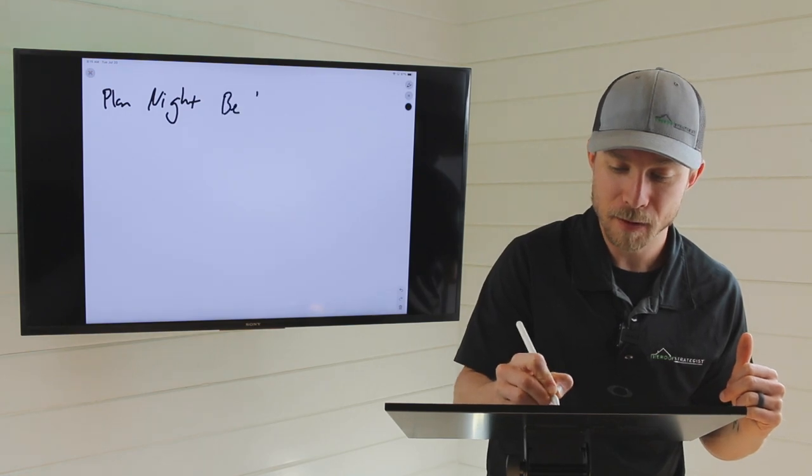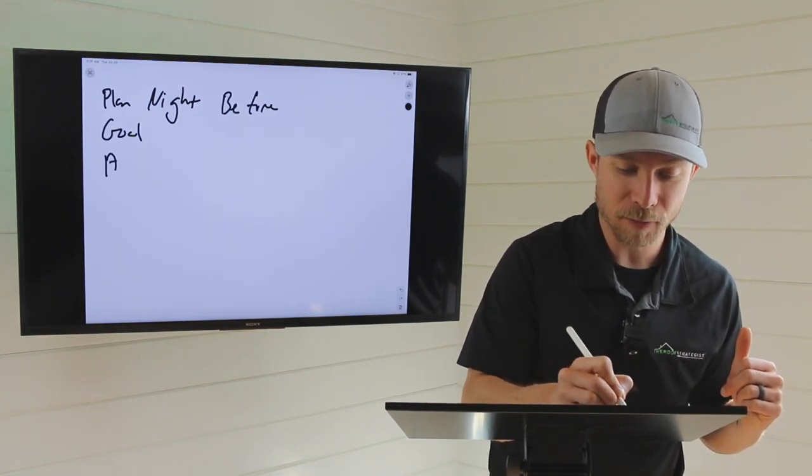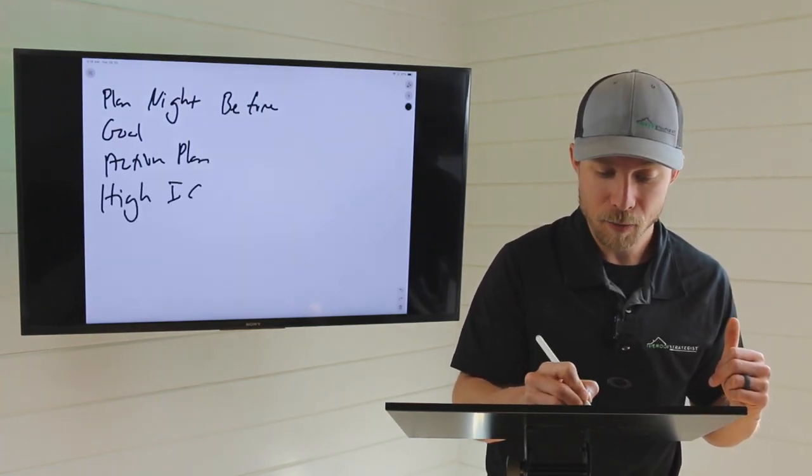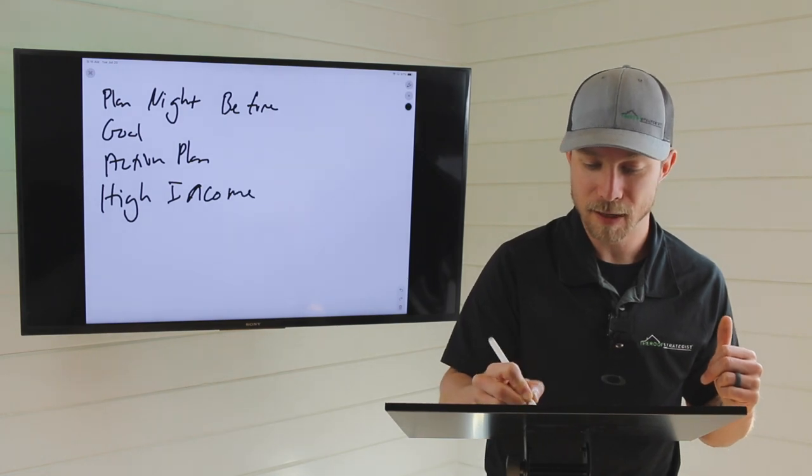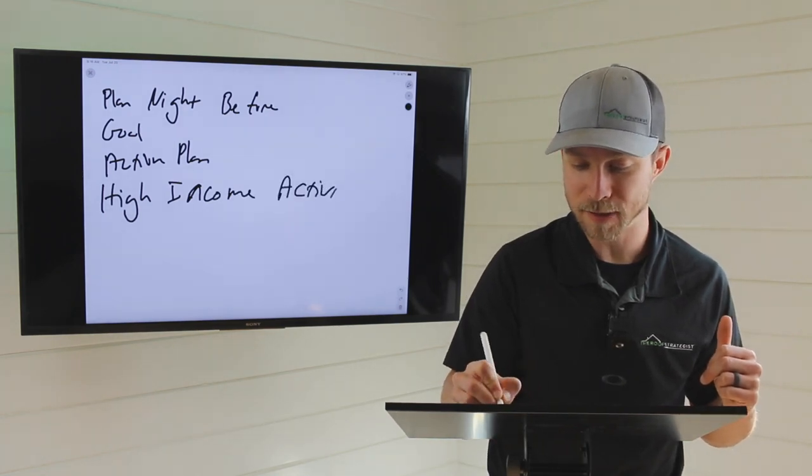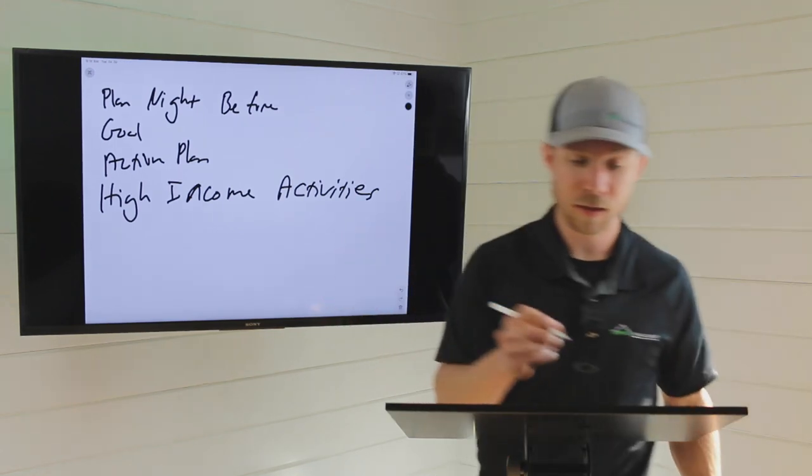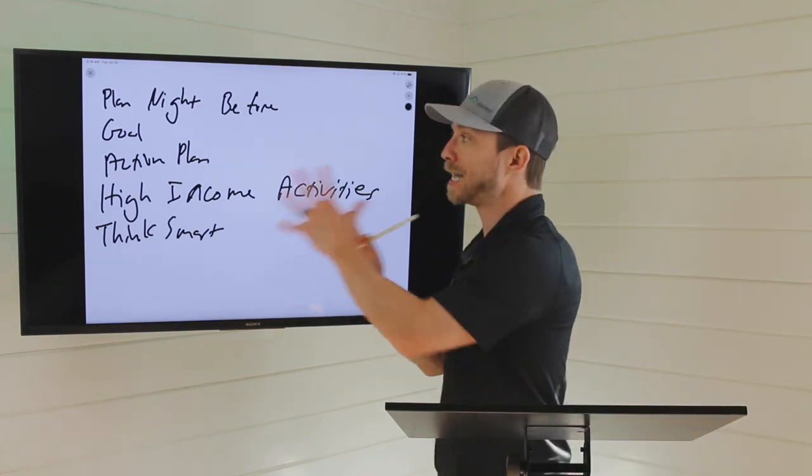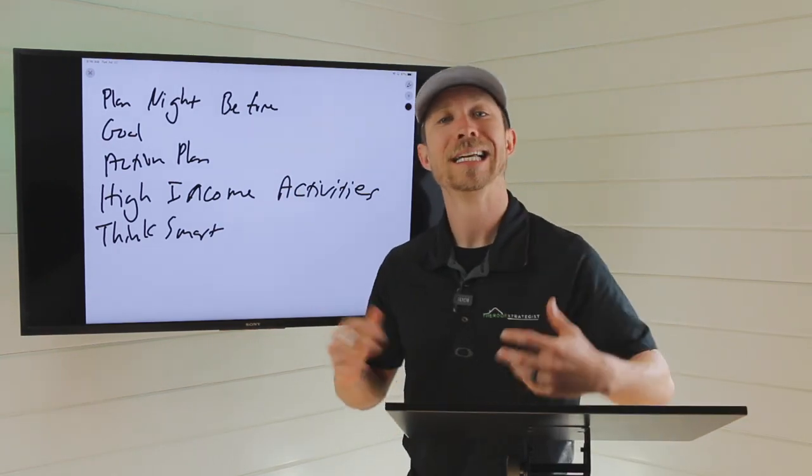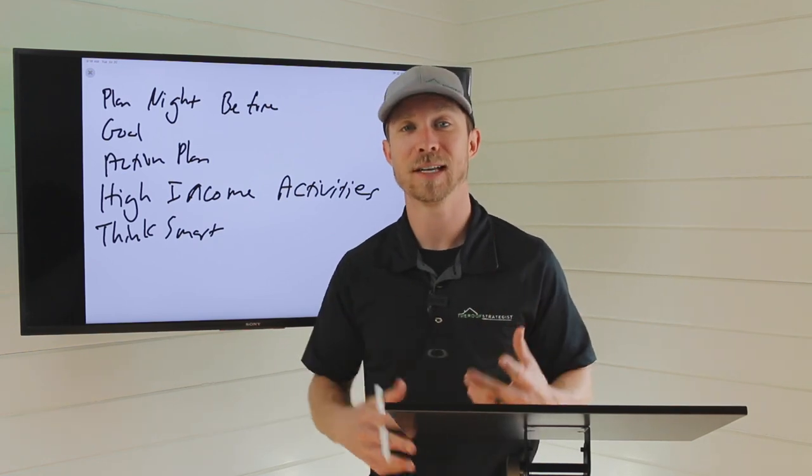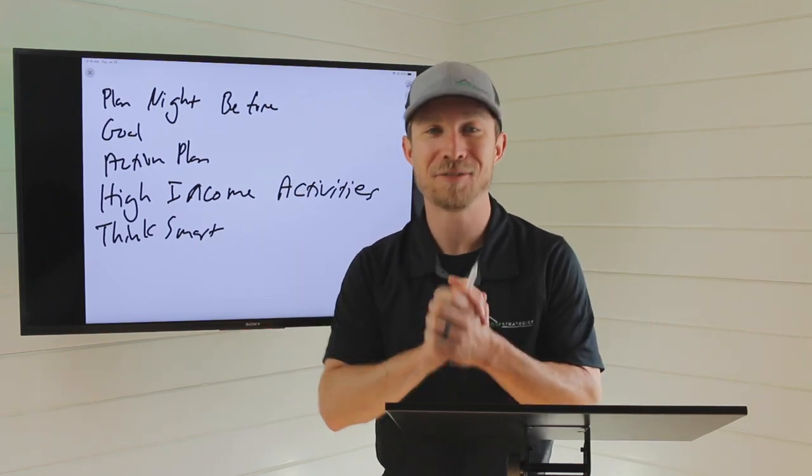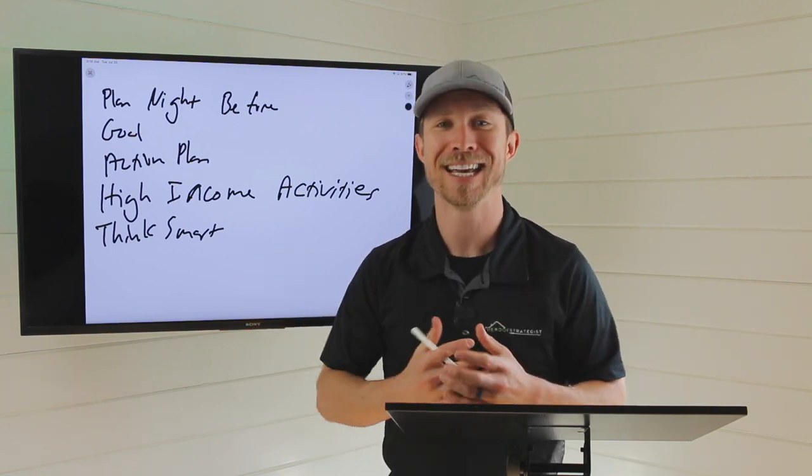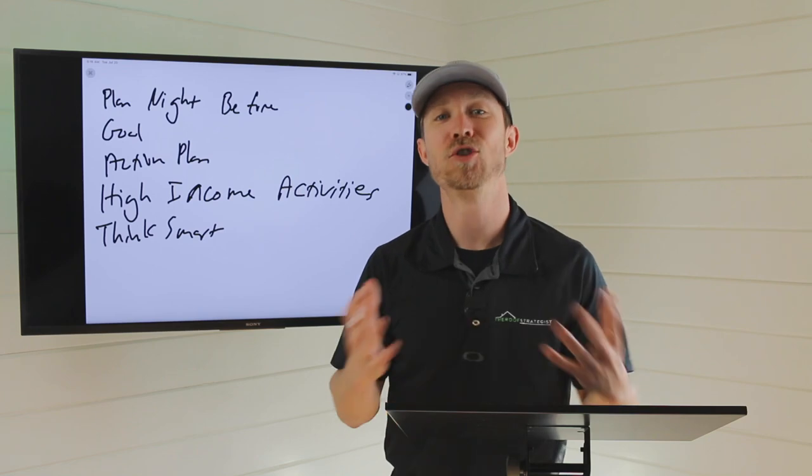So at the end of the day, the high level details are this: plan the night before, have a daily goal, have an action plan, structure your day around high income producing activities, and then think smart about limiting your time and use it wisely. Here's a quick recap to help you see what it's like as a day in the life in roofing sales out in the field, having fun serving people and somehow getting paid a really great sum of money to take care of folks and enjoy the journey.